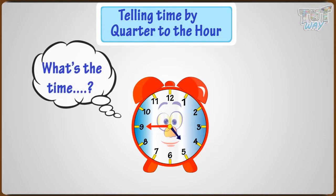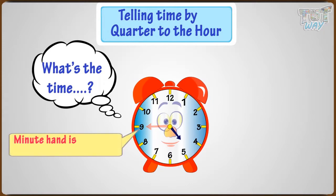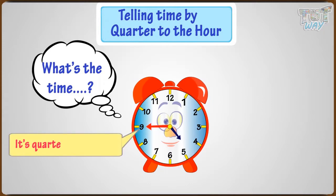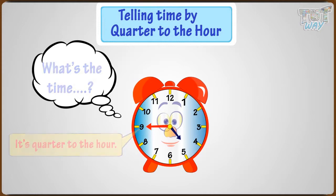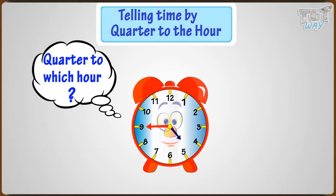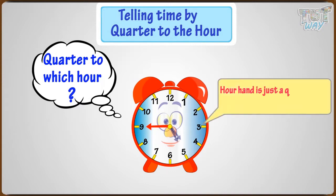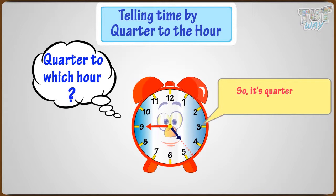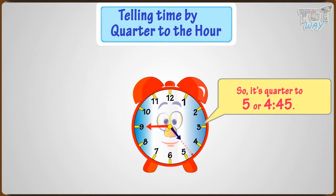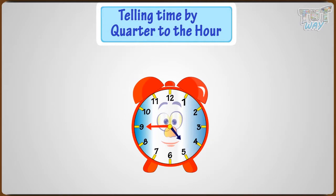Let's take another example. What's the time in this analog clock? The minute hand is pointing at nine, so it's quarter to the hour. But quarter to which hour? The hour hand is just a quarter away from five — see the dotted line. So it's quarter to five, or four forty-five.